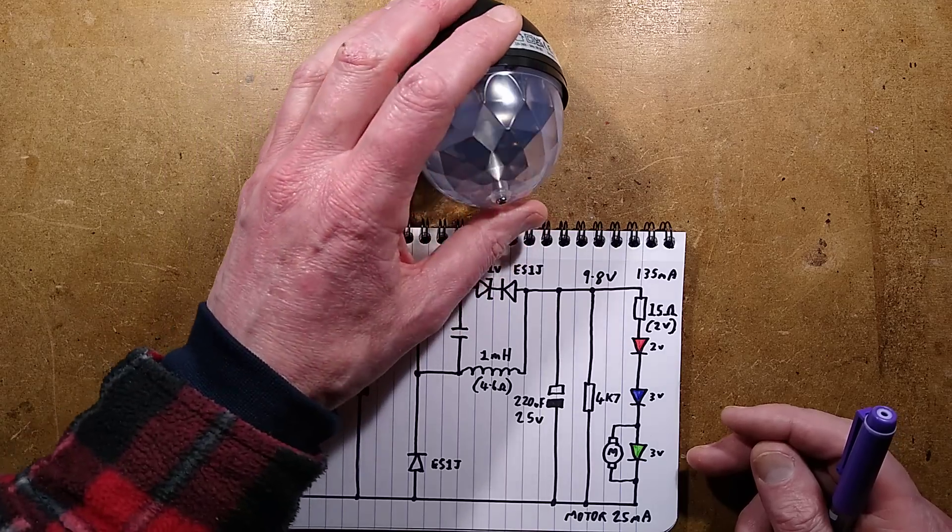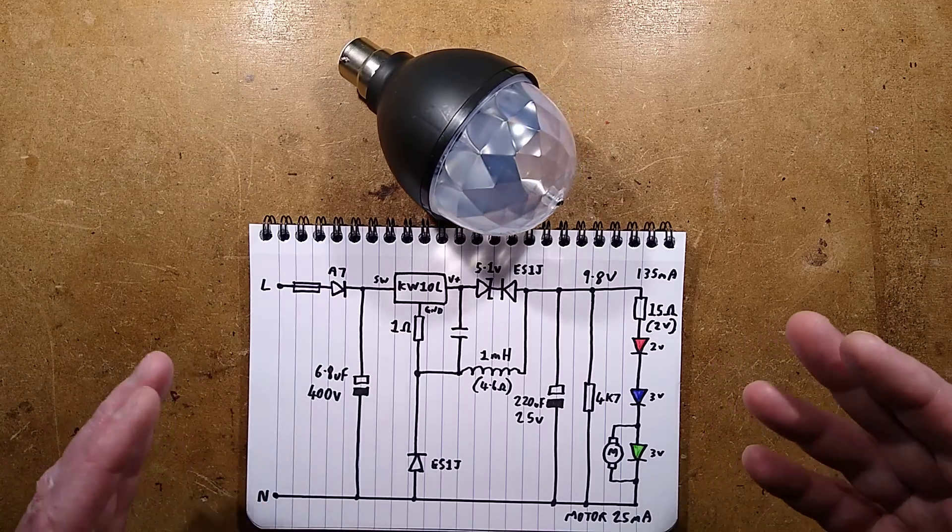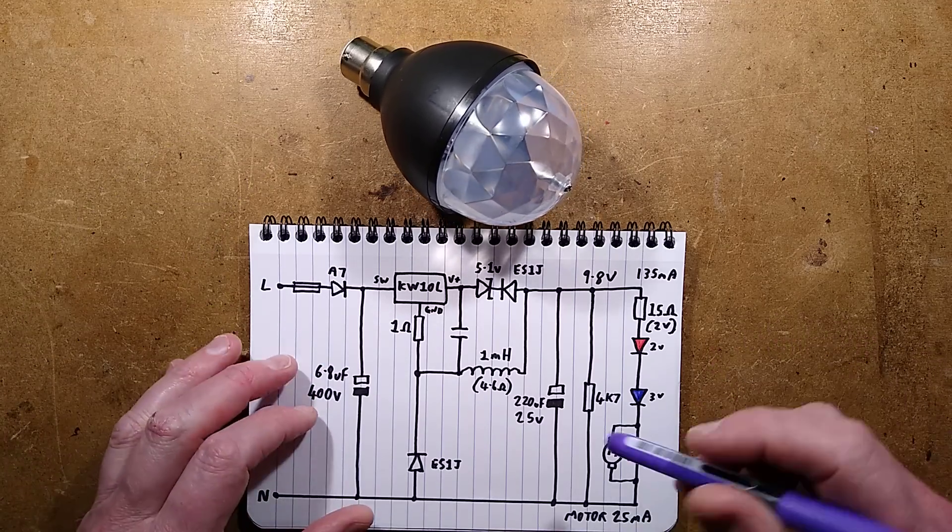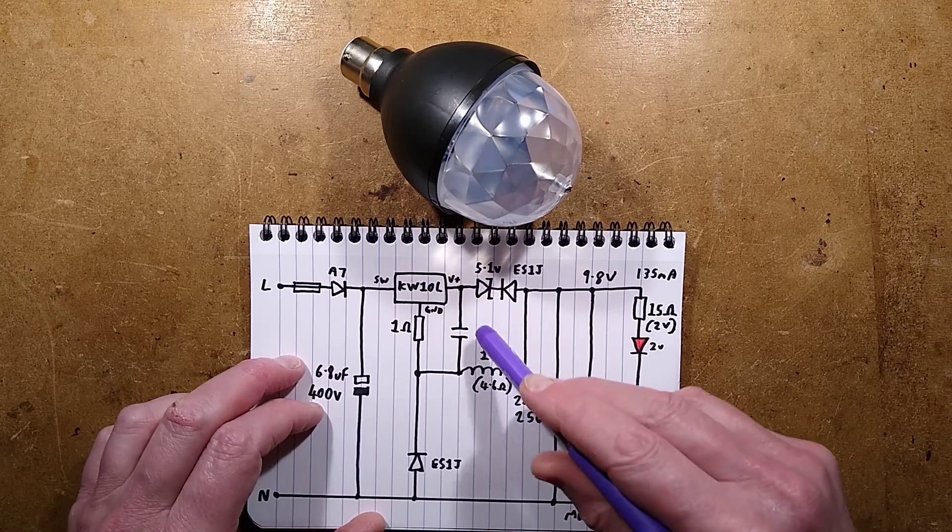So that is it. The disco lamp all back together and working. That has basically, oh, I should have mentioned, the 1 millihenry inductor I took it out of circuit, tested it at 4.6 ohm. I didn't take this, the only component I couldn't give you a value for, I guess it's maybe 100 nanofarads, is this capacitor.